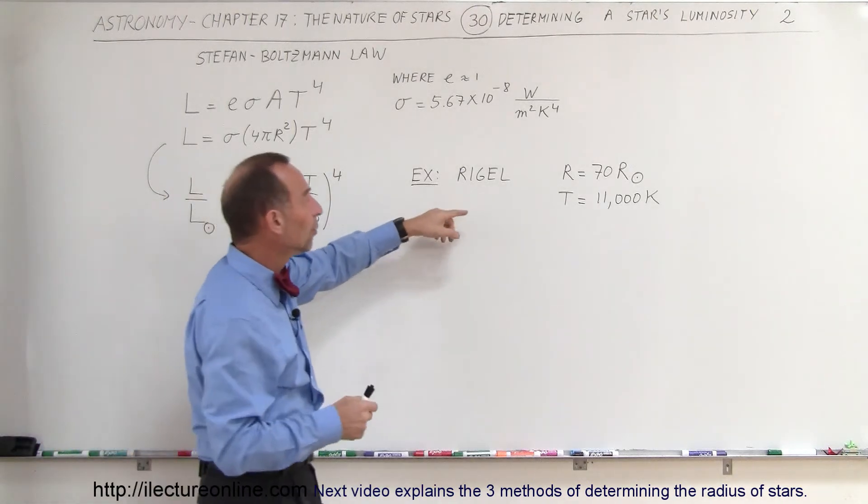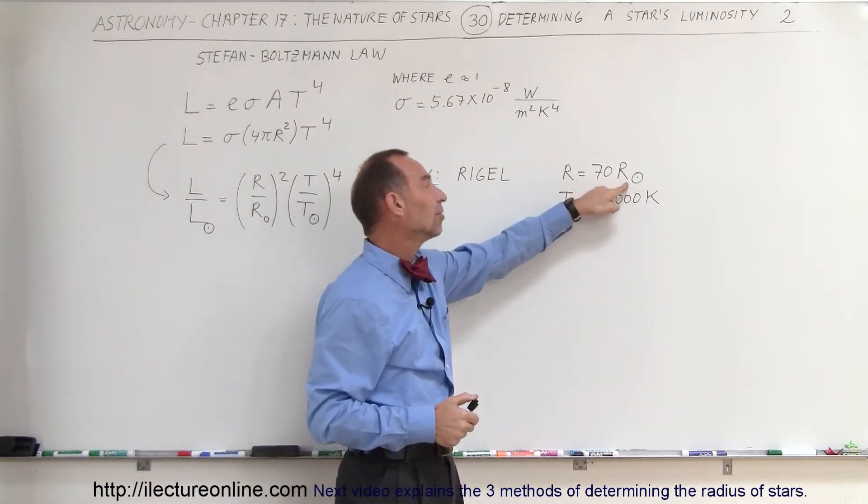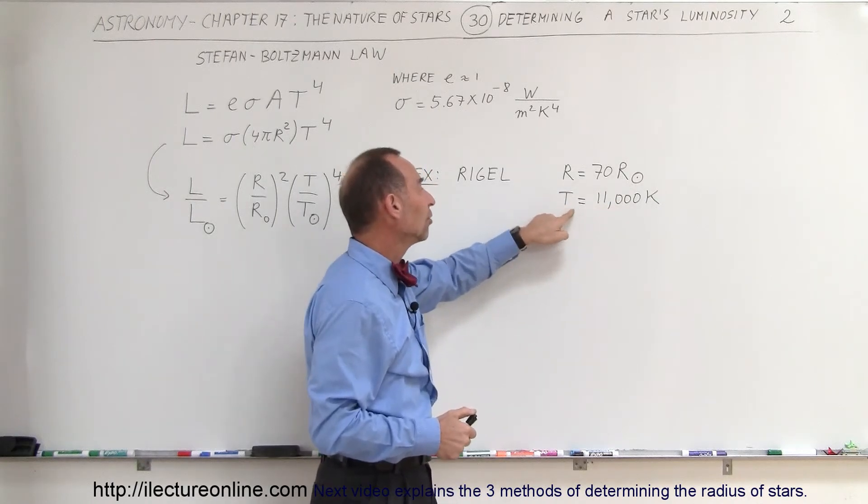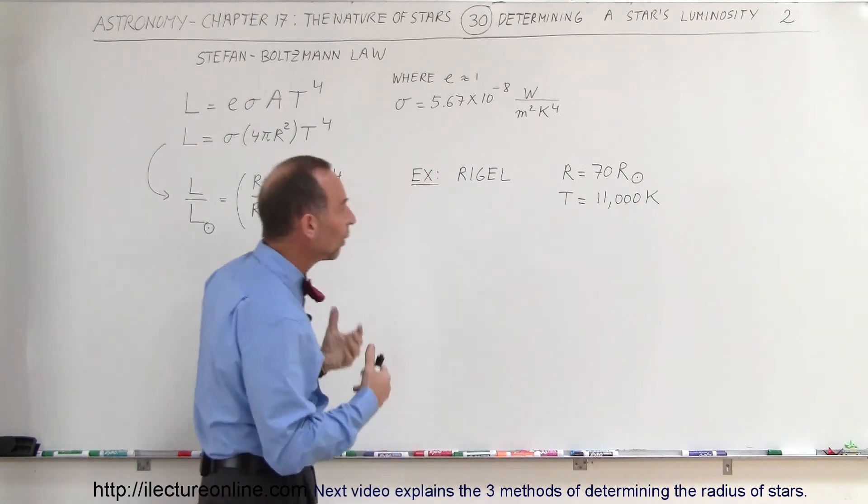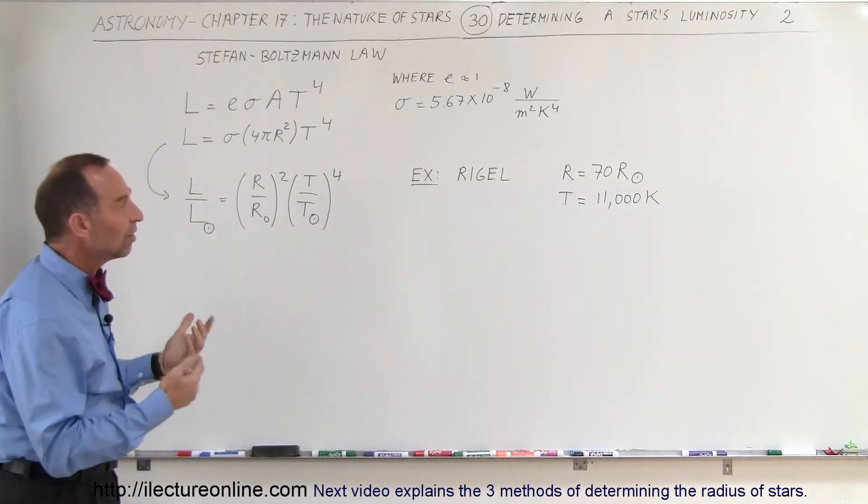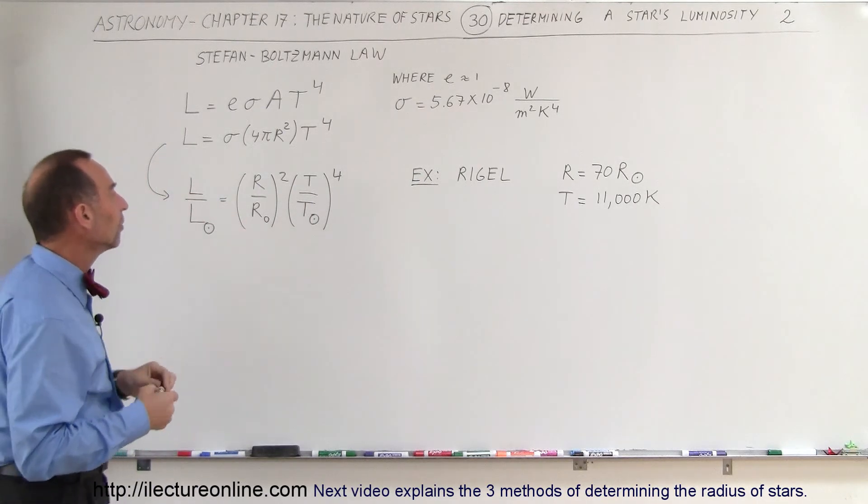For example, Rigel has a radius about 70 times the radius of the sun and a temperature of about 11,000 Kelvin. So relative to the sun, what is the luminosity of Rigel? Let's go ahead and work that out.